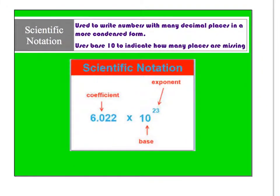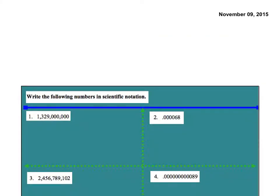Scientific notation is used to write numbers with many decimal places in a more condensed form and uses base 10 to indicate how many places are missing. This would be called the coefficient, this is called your base which is almost always going to be 10, and this is your exponent which tells you how many decimal places to move it over.